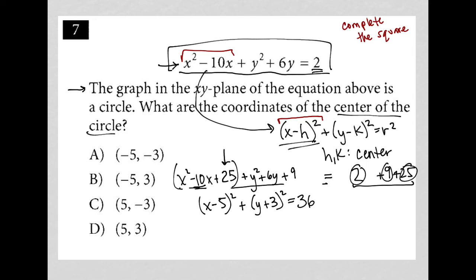Now we have the structure we want where h is equal to 5, because x minus h, so h must be positive 5. And k is equal to negative 3. Because y minus k, in order to get a y plus 3, that means k must be negative 3. So our center has to be 5 comma negative 3. And, therefore, our answer here is choice C.